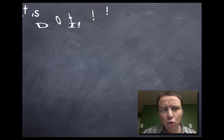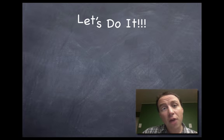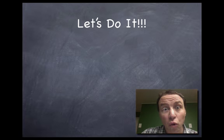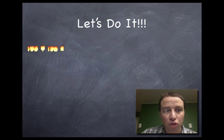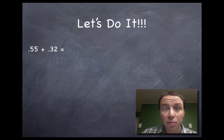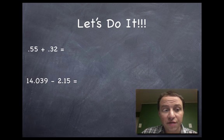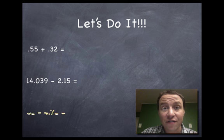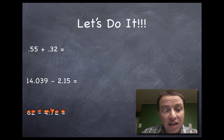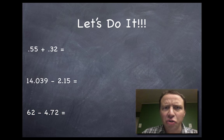Okay, so let's get into it. Let's do it. I'm going to give you three problems and then we're going to go over some important rules for solving them. First problem, 0.55 or 55 hundredths plus 0.32 or 32 hundredths. Second problem is going to be 14.039 or 14 and 39 thousandths minus 2.15 or 2 and 15 hundredths. And our last problem, 62 minus 4.72 or 4 and 72 hundredths.